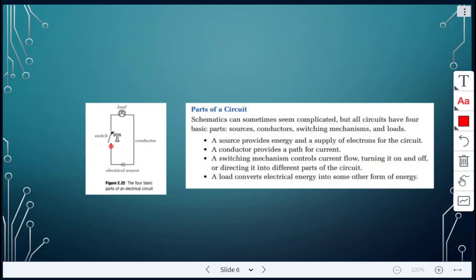The switching mechanism, there's the switch right there, that controls current flow. You can turn it on and off, and then the load, in this case here, that's the load, the light bulb, and it's going to convert electrical energy into some other form of energy. So just light and heat.